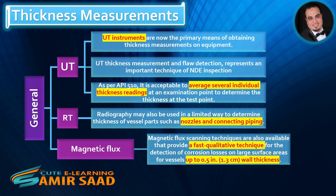General: UT instruments are now the primary means of obtaining thickness measurements on equipment. UT thickness measurement and flaw detection represents an important technique of NDE inspection. As per API 510, it is acceptable to average several individual thickness readings at an examination point to determine the thickness at that test point. Radiography may also be used in a limited way to determine the thickness of vessel parts, such as nozzles and connecting piping.